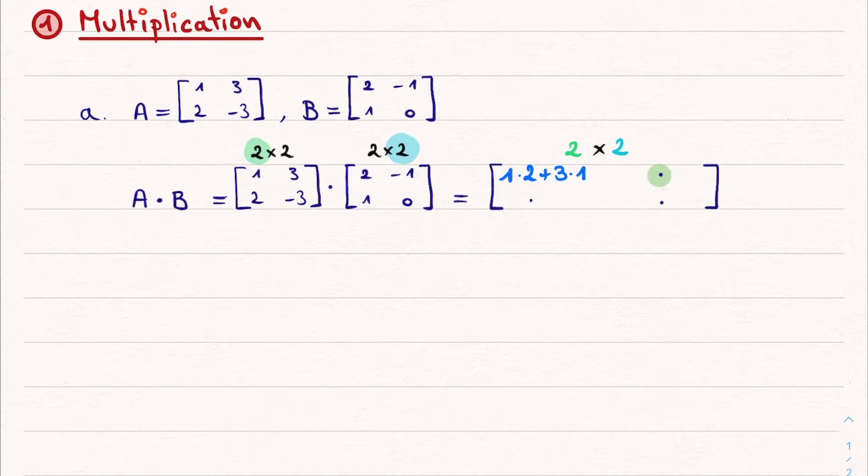Next, we move to the upper right element, still on the first row, but now on the second column. Therefore, again, we single out the first row of A and the second column of B.